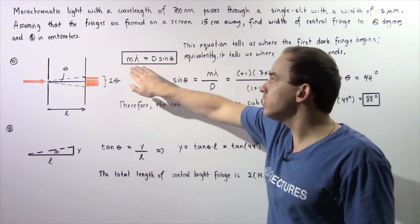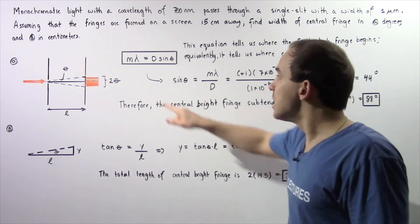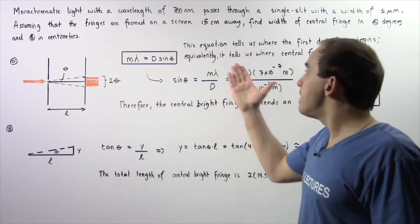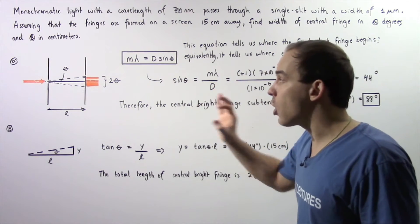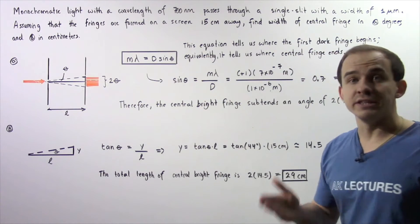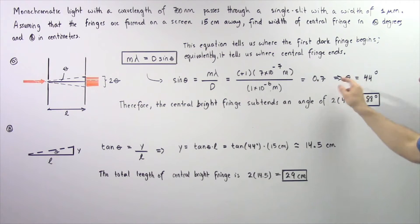Let's begin by recalling this equation which we discussed in the previous lecture. This equation basically gives us where our dark fringes are formed and equivalently it tells us where the central bright fringe ends.